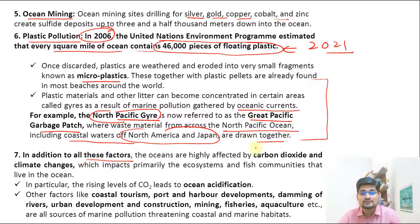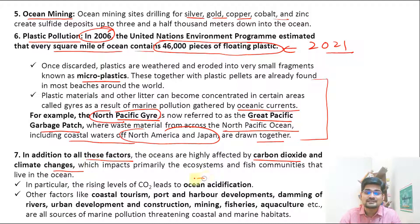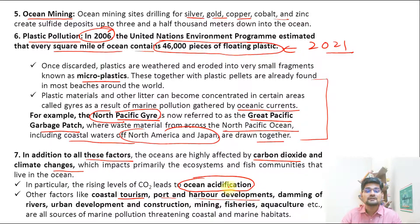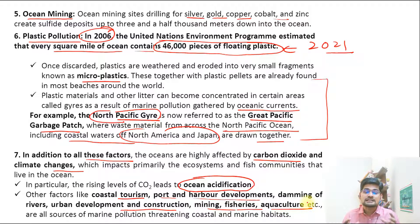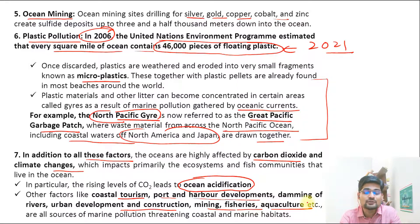In addition to all these factors, there is the high impact of carbon dioxide and climate change. Ocean acidification is increasing day by day. Other contributing factors include coastal tourism, port and harbor developments, damming of rivers, urban development and construction, mining, fisheries, and aquaculture — all threatening coastal and marine habitats across the world.